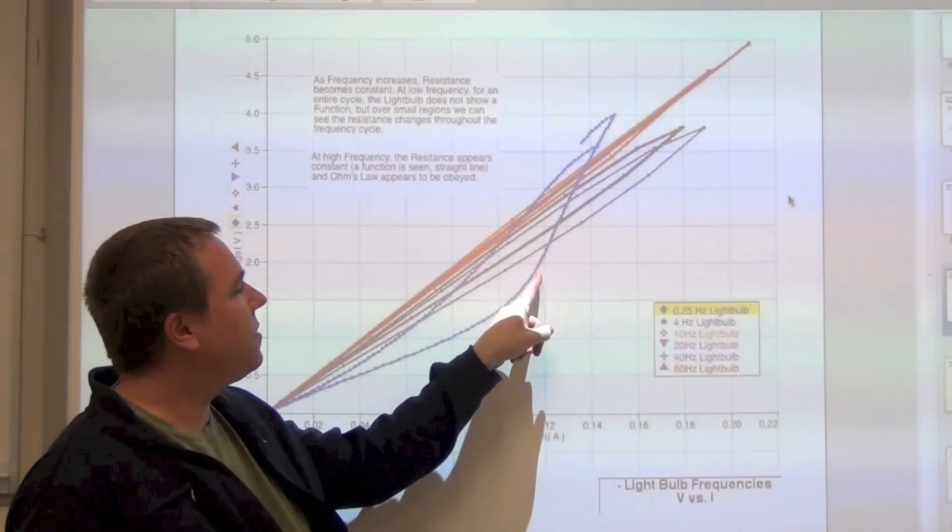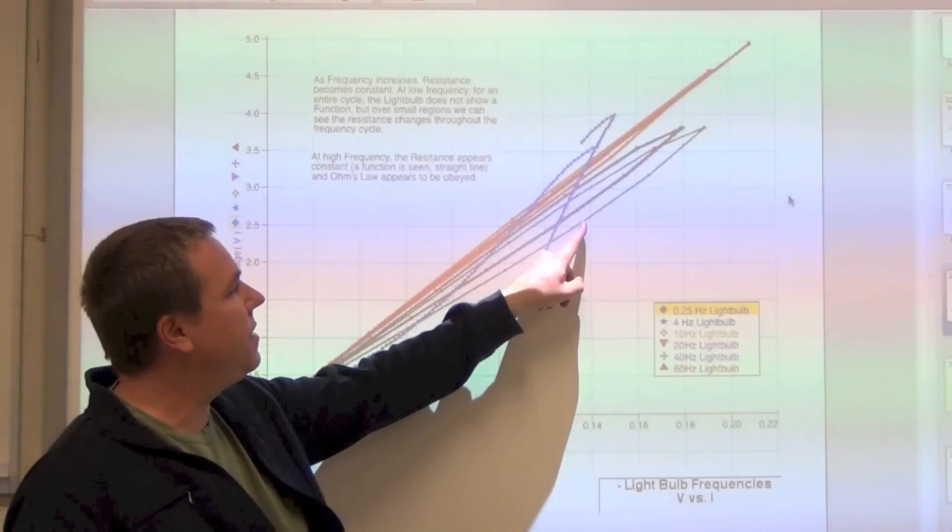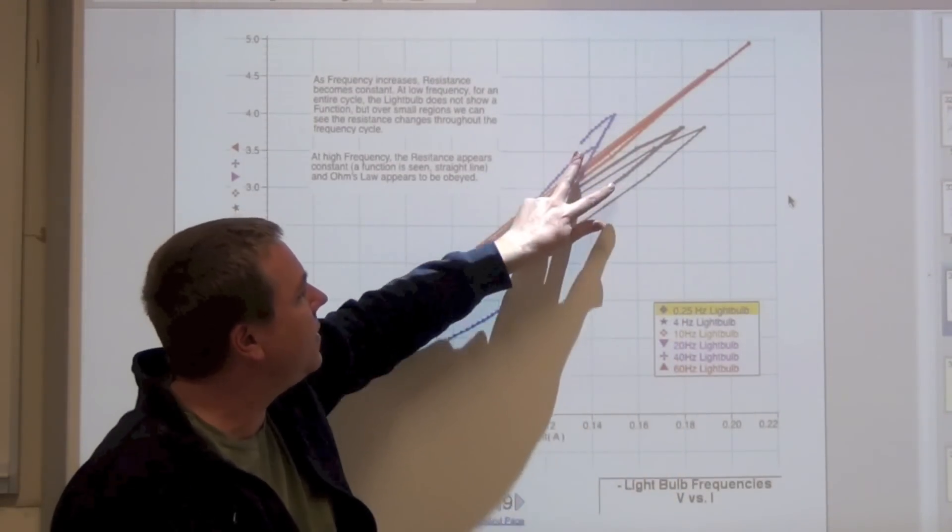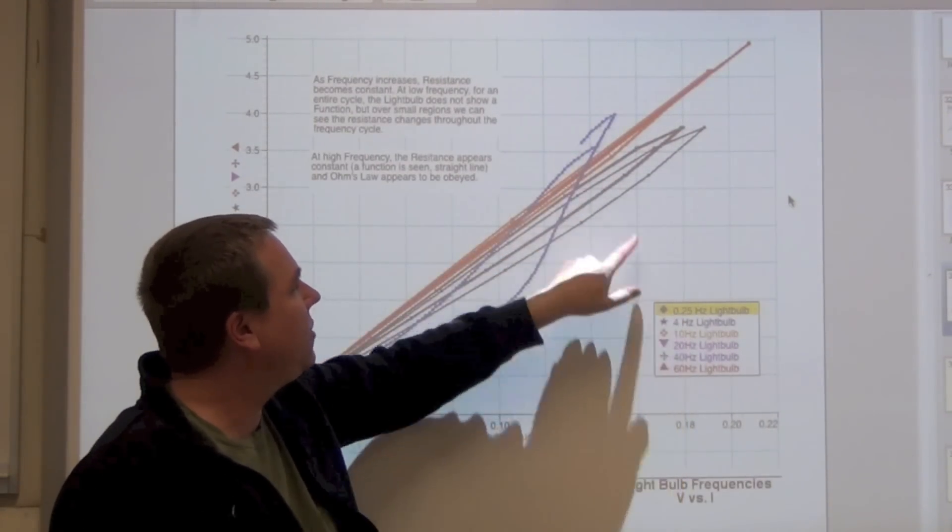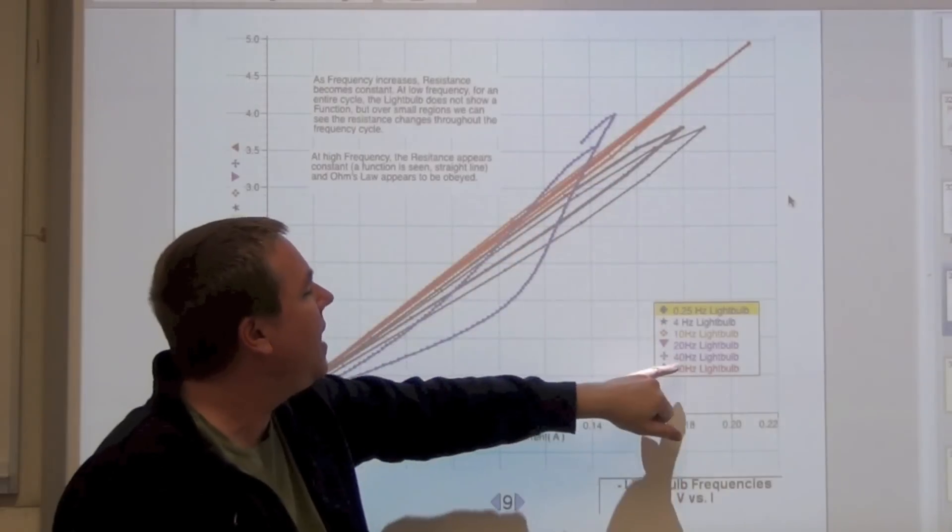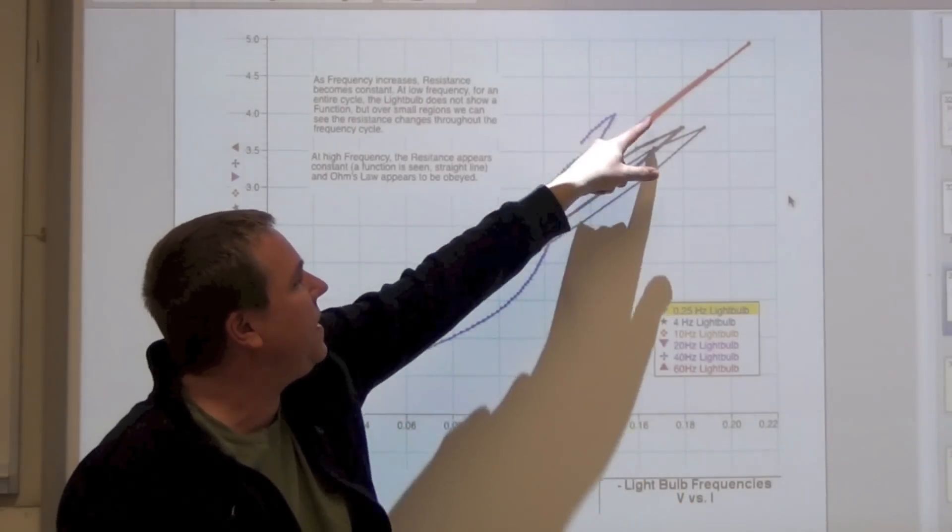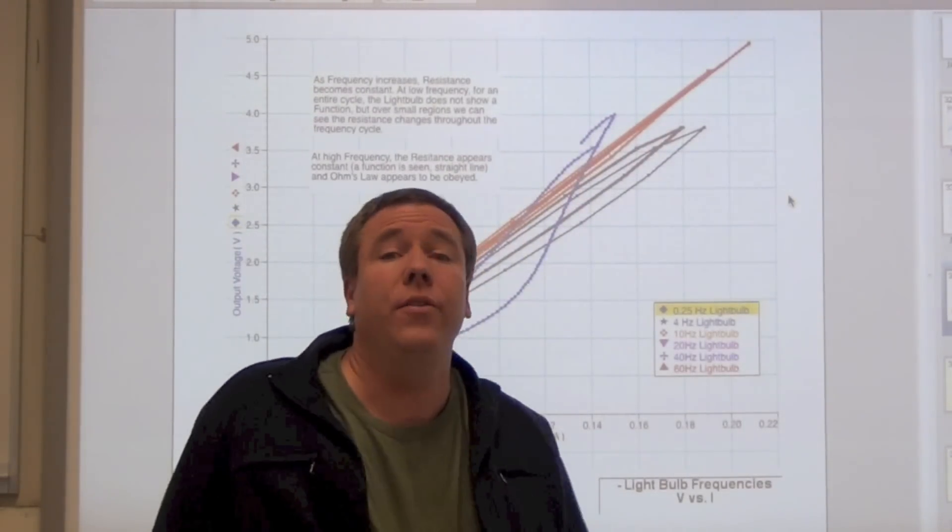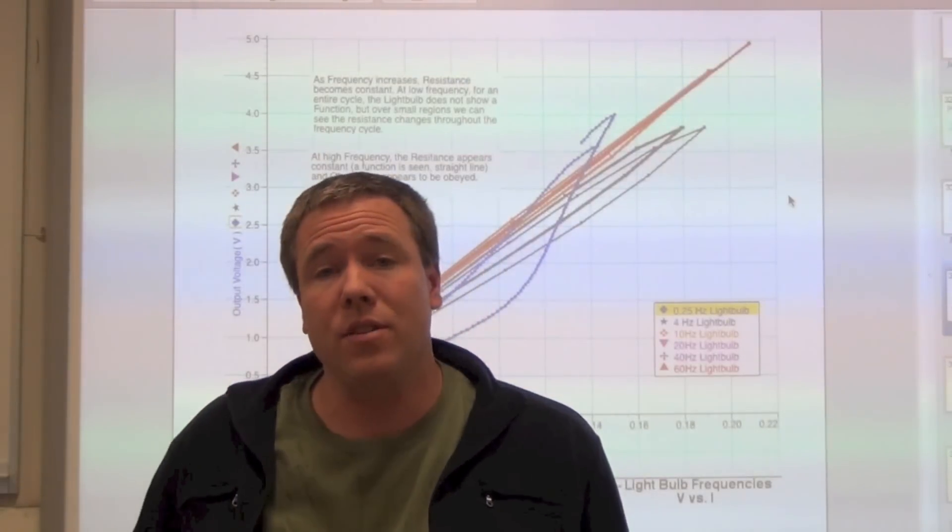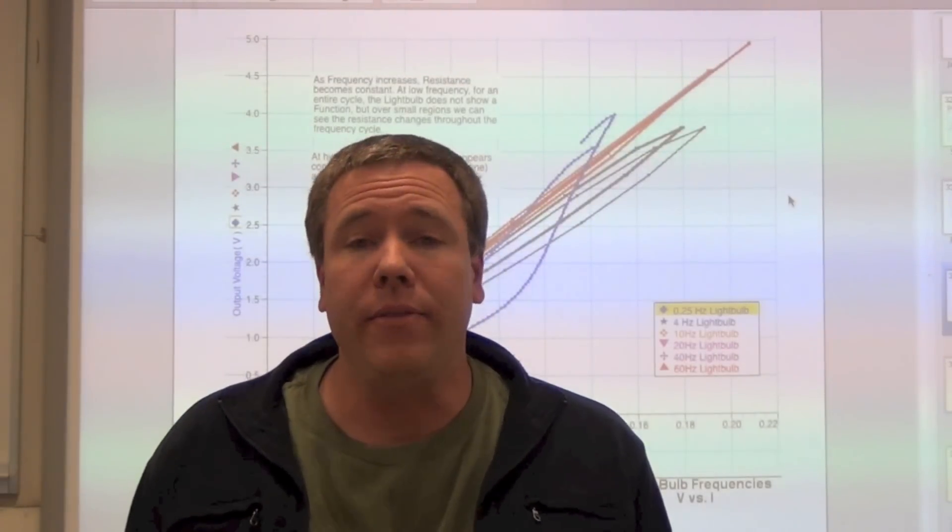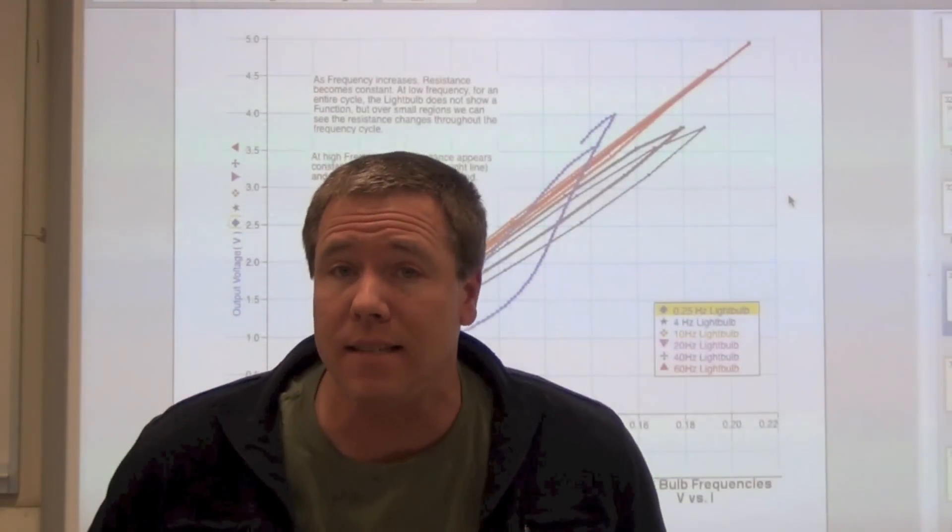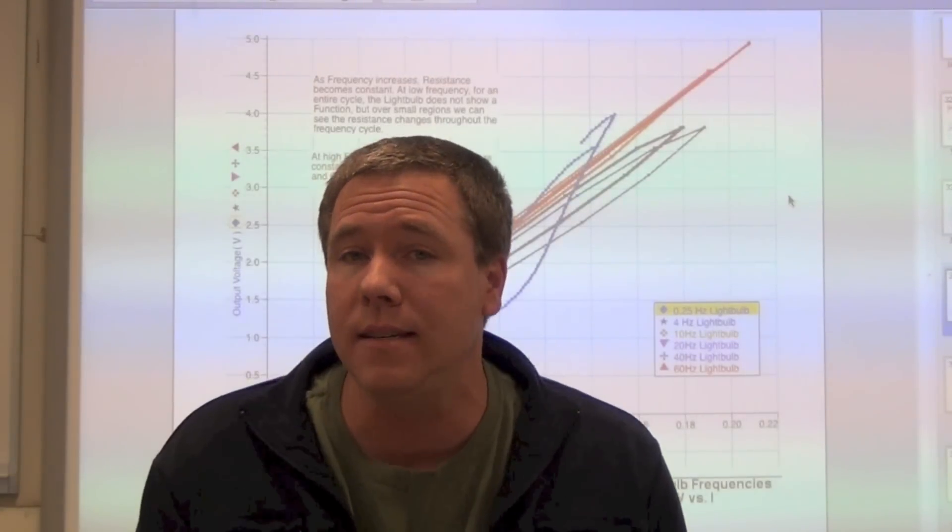And in fact, we see from this plot that here's 0.25 hertz. This one that loops around is 4 hertz. And then 10 hertz is a little bit tighter. And then we have 20 hertz, which is even tighter. And then 40 and 60, which begins to look like a straight line. In other words, throughout all cycles, the light bulb appears ohmic because it's now a function. We're not limited to just looking at part of the cycle. The light bulb is just burning and it reaches some steady state temperature. And now it has a constant resistance.